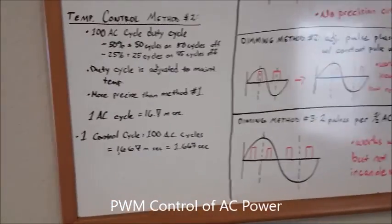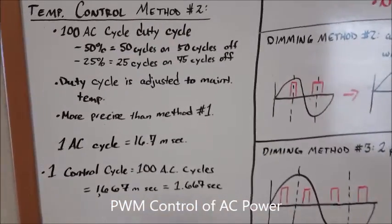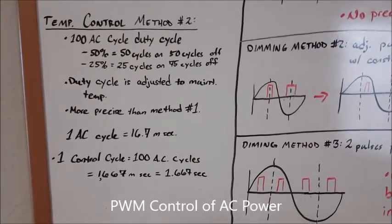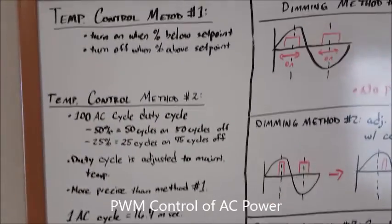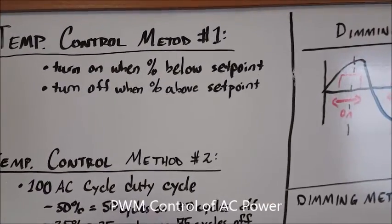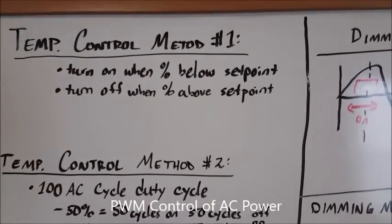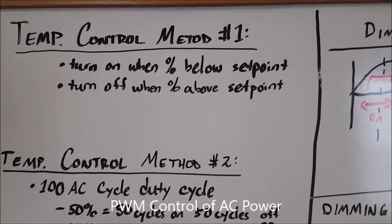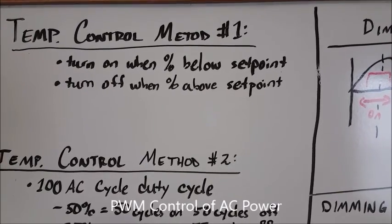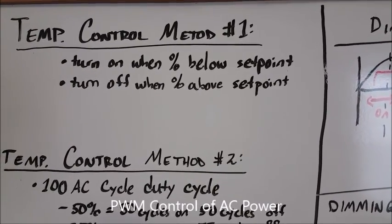Here we have a quick description of methods of temperature control and our light dimming project and how they relate. The first method is a feedback loop where the controller measures temperature. When it's below a certain set point it turns on, and when it's above the set point it turns off, which leads to temperature oscillation.